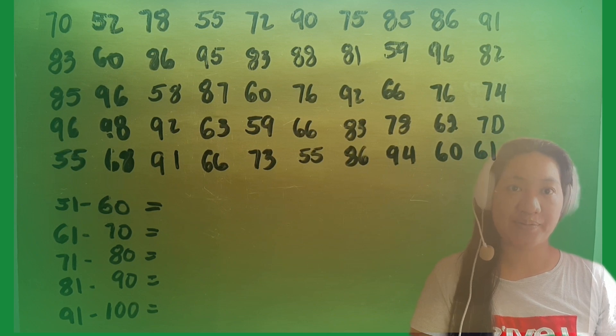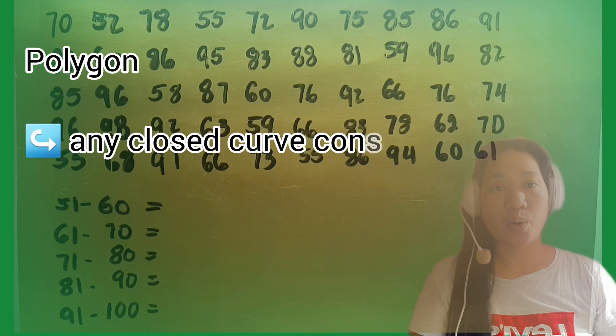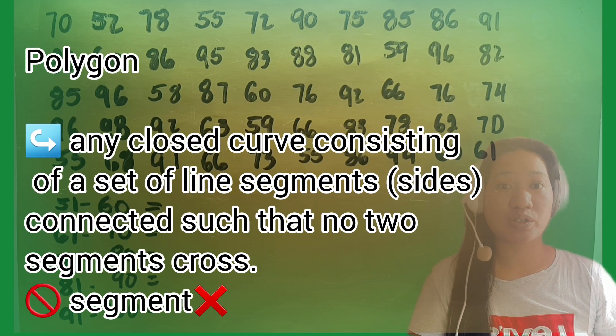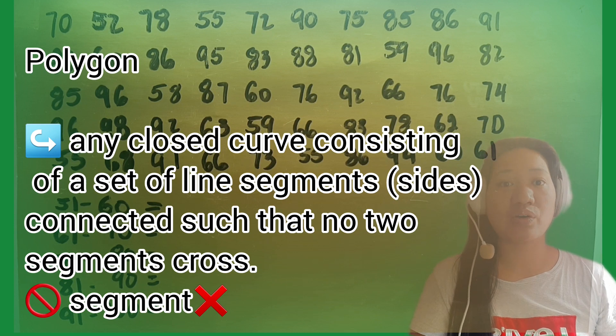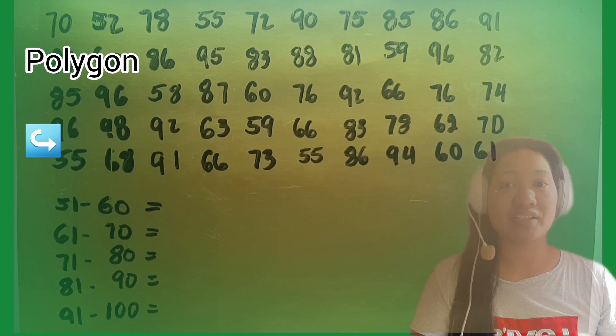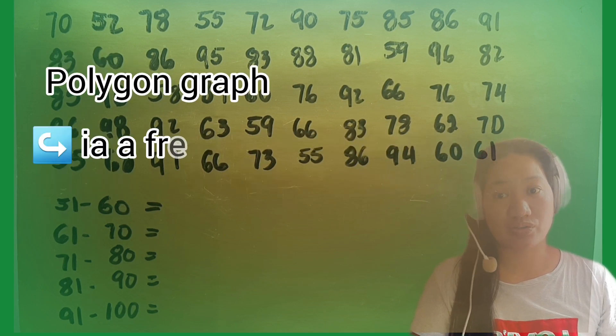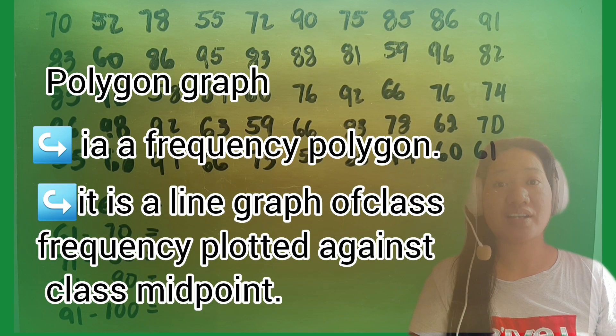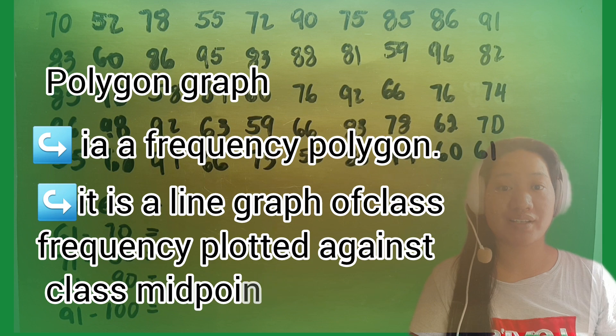First, we are going to define what is polygon. Polygon is any closed curve consisting of a set of line segments or sides connected such that no two segments cross. So polygon graph, a frequency polygon, is a line graph of class frequency plotted against class midpoint.